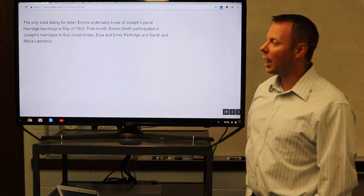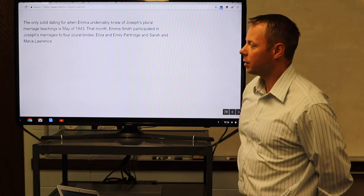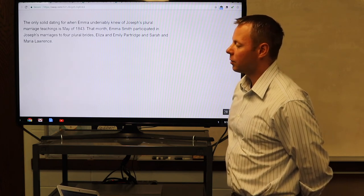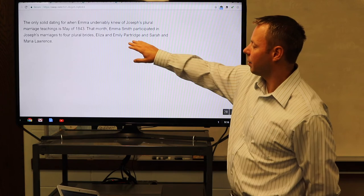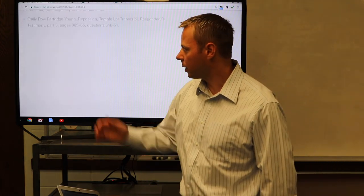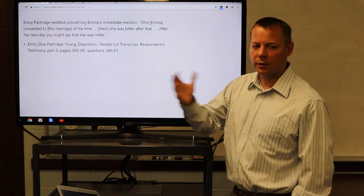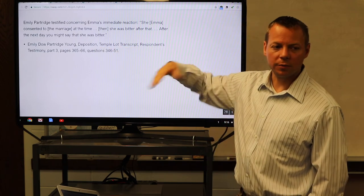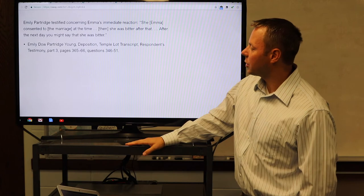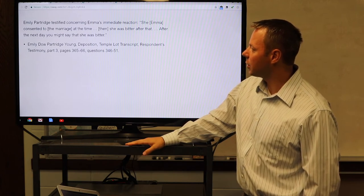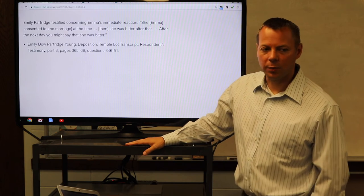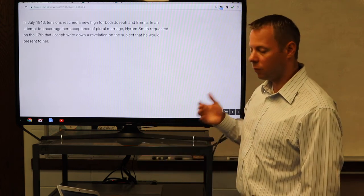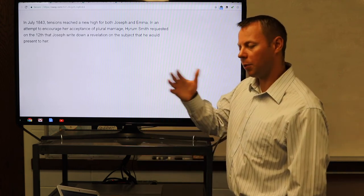The only solid dating that we have for when Emma undeniably knew of Joseph's plural marriages was in May of 1843. Emma Smith that month participated in Joseph's marriages to four plural brides: Eliza and Emily Partridge, and Sarah and Maria Lawrence. Here's where we get to her up-and-down feelings about this. Emily Partridge testified concerning Emma's immediate reaction: She consented to the marriage at the time, but she was bitter after that. After the next day, you might say that she was bitter. That's the first time that we know for sure that she was involved and at least participating in some sense.